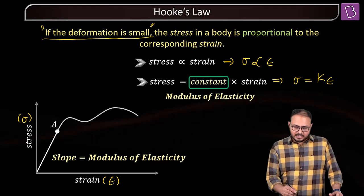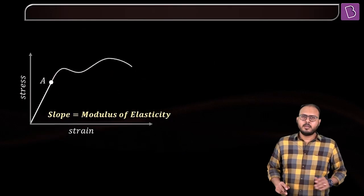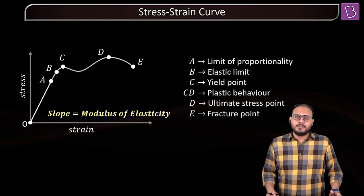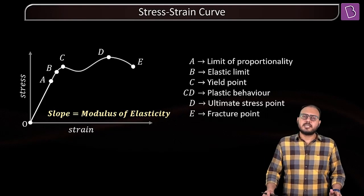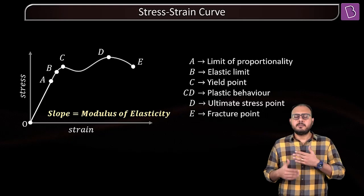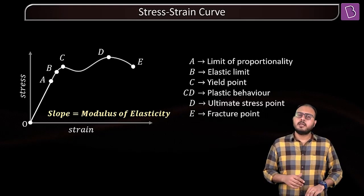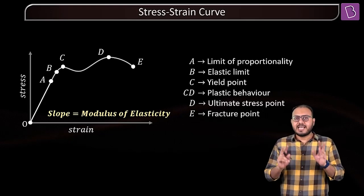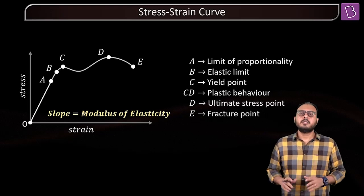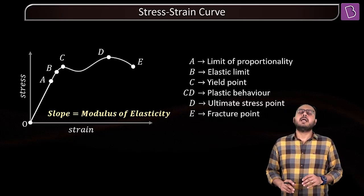Coming back to our question — what happens after point A? Let me explain what small deformation means. Anybody here has ever trained for a marathon? What happens is, let's say you are habitual to run five kilometers every day. Your body is attuned, your body is used to that five-kilometer running stress. So you run, you stop, sip of water, you stretch your hamstrings, quadriceps, glutes, calves, and after a while you are okay.